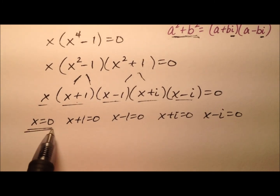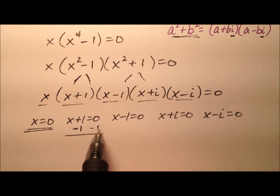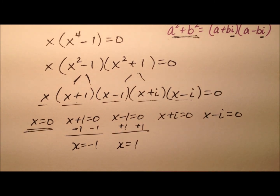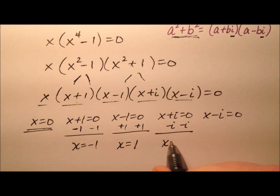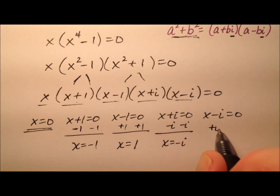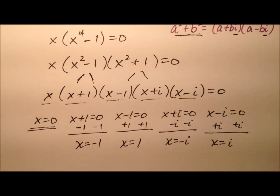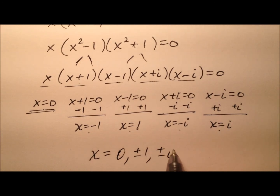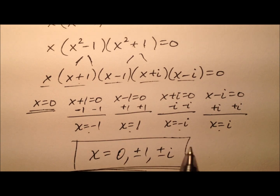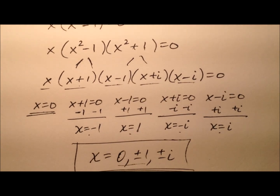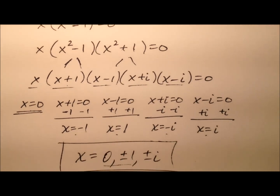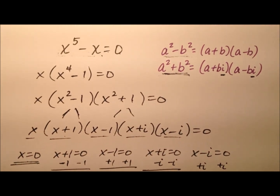Solving all of these: x equals zero is already solved. Subtracting one from both sides gives x equals negative one. Adding one to both sides gives x equals positive one. Subtracting i from both sides gives x equals negative i, and adding i to both sides gives x equals positive i. So we have five answers: x equals zero, plus or minus one, plus or minus i. Some are real and some are imaginary, but those are all the solutions for x to the fifth minus x equals zero. I'd encourage you to plug them in to verify that they work.